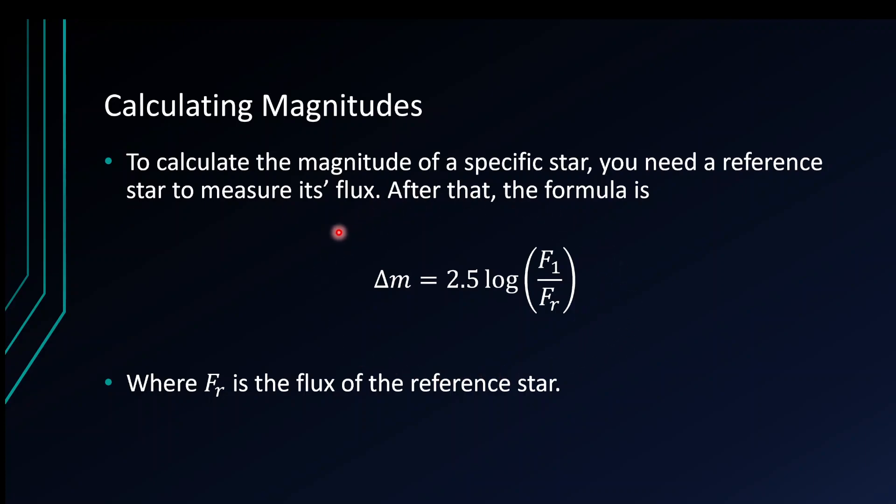This formula represents the change in magnitudes between the stars: 2.5 times log base 10 of the ratio of flux.